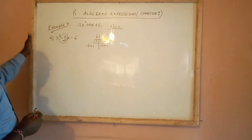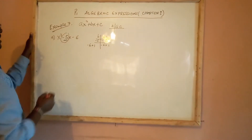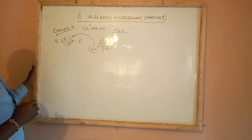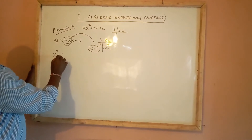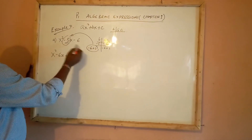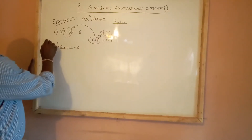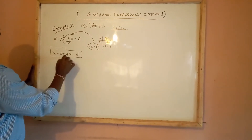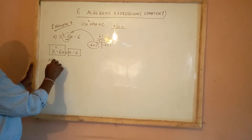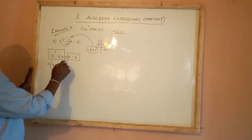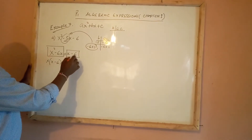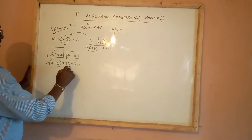After identifying the two terms — negative 6 and positive 1 — we use them to substitute the middle term. We write it as x squared minus 6x plus 1x minus 6. We factorize two terms at a time: in the first two, x is common giving x(x minus 6); in the last two, 1 is common giving 1(x minus 6). Notice both brackets are identical.